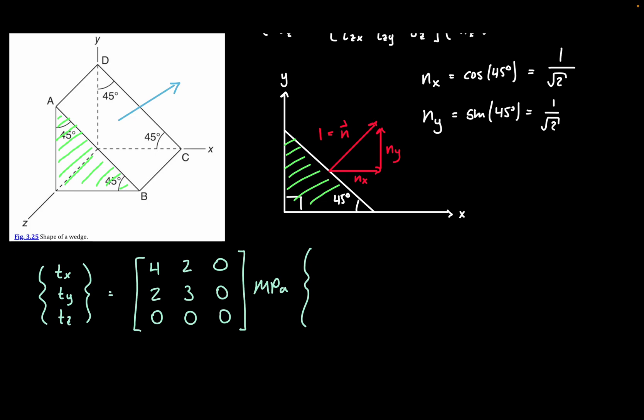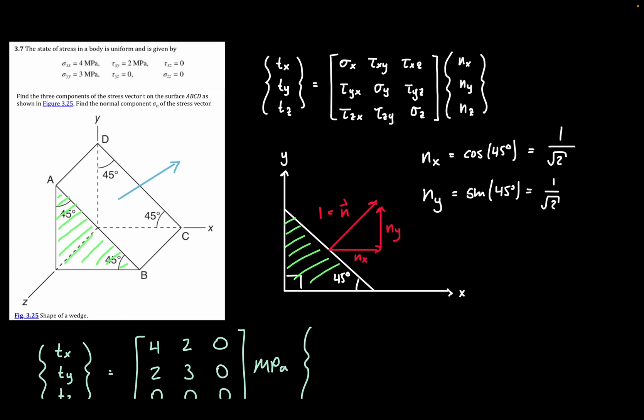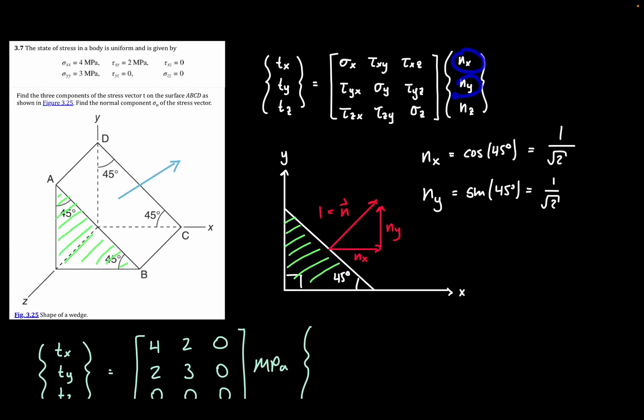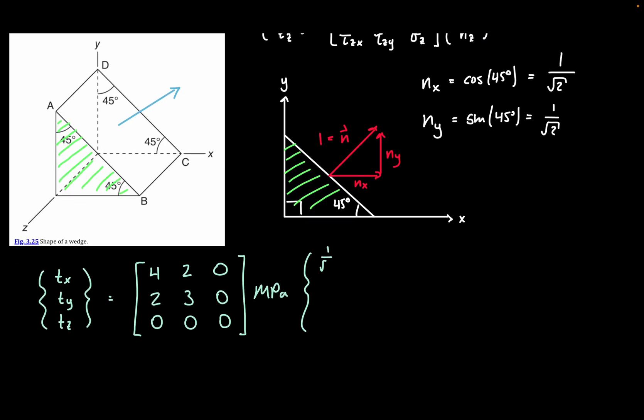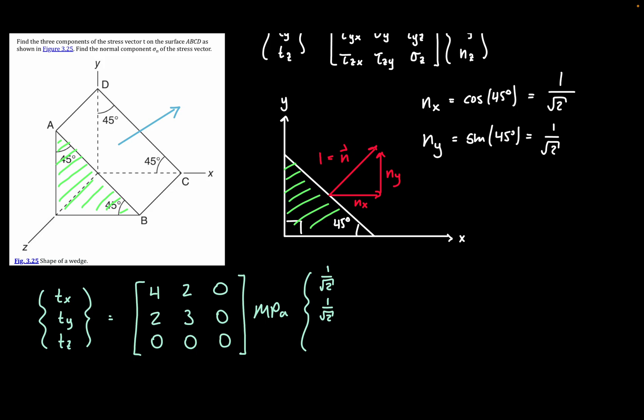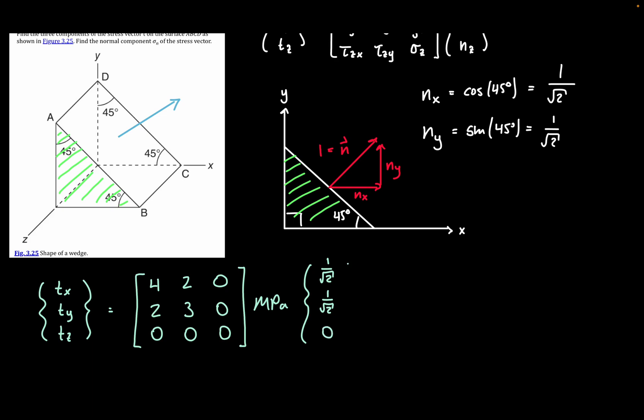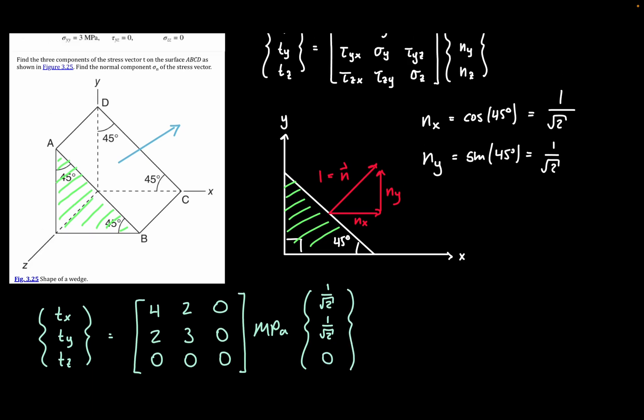But then for the normal vector, we'll take the NX component. So we'll have NX, NY, and then NZ. So in the X direction we have 1 divided by radical 2, same thing in the Y direction, and then here we have no Z component, right, because we're still in that XY plane. So I'll actually say 0 for our N sub Z component.